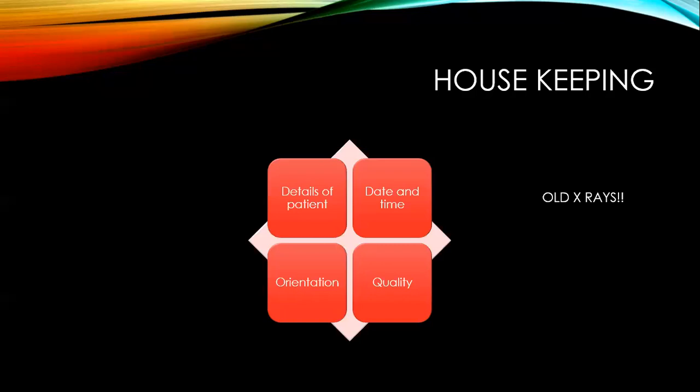Before you interpret any X-ray, it's important to go through a few housekeeping things. You look at the details of the patient — make sure that you have the right patient's X-ray in front of you. You look at the hospital number, the date of birth, and the name. It is obviously a catastrophe if you make a decision about a patient based on somebody else's X-ray. If it's 3 a.m. in the morning and you're in A&E or an acute medicine unit, it's not uncommon to click on the wrong patient, so make sure you've got the right person.